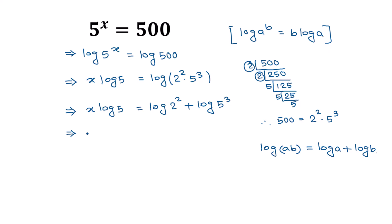Applying the power rule again — log of a to the power b equals b times log of a — log of 2 squared becomes 2 times log of 2, and log of 5 to the power 3 becomes 3 times log of 5. So x times log of 5 equals 2 log 2 plus 3 log 5.